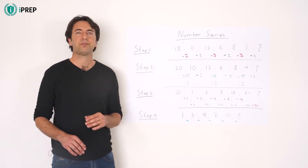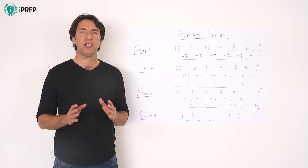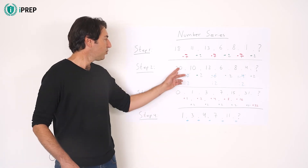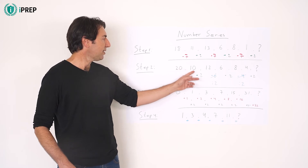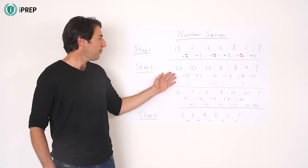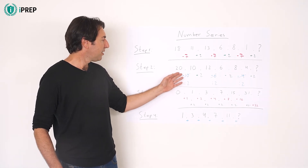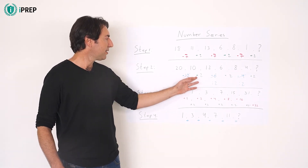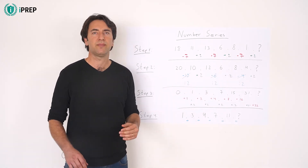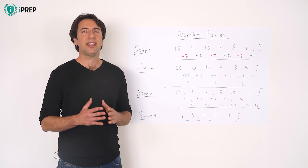Step 2. Check if some differences may be interpreted differently. For example, in this series: 20, 10, 12, 6, 8, 4. If you write it as subtraction, you have minus 10, plus 2, minus 6, plus 2, minus 4. These differences do not reveal any pattern.